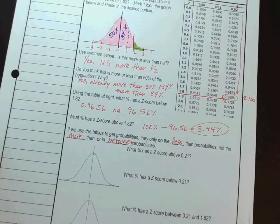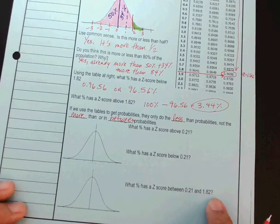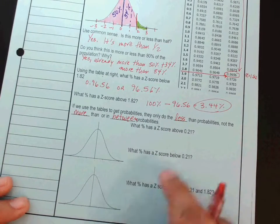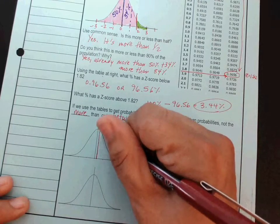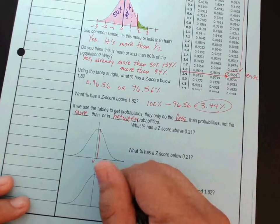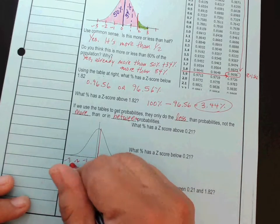But, what about in-between? So, we're going to get to that in a second. Our goal is to do in-between 0.21 and 1.82. So, let's start, first of all, with 0.21. 0.21 is somewhere around here, because this is 0, 1, 2, 3, negative 1, negative 2, negative 3.